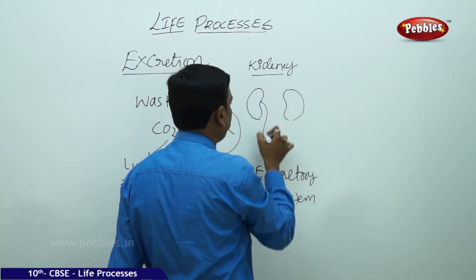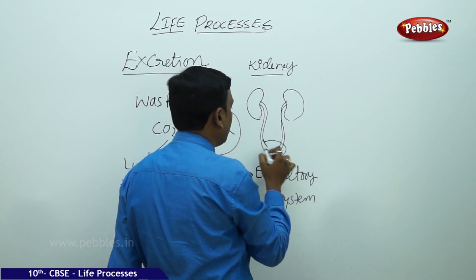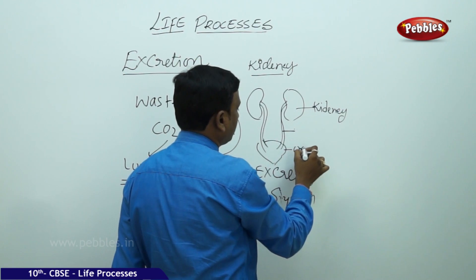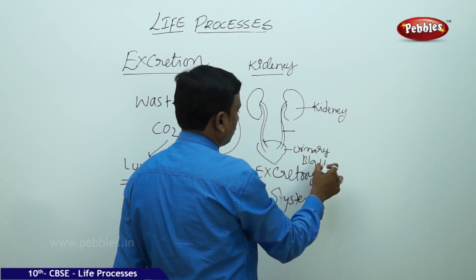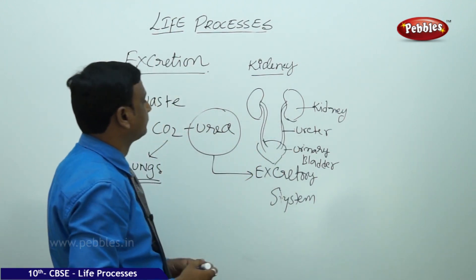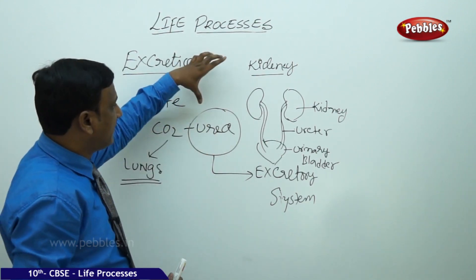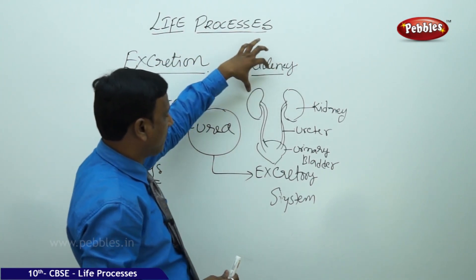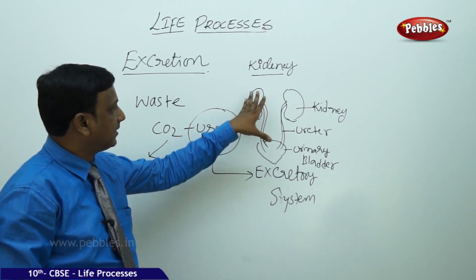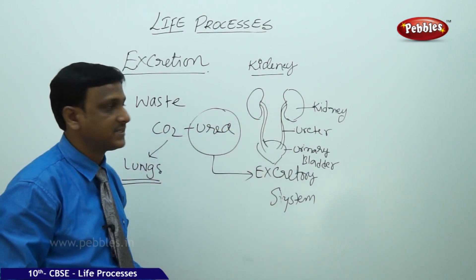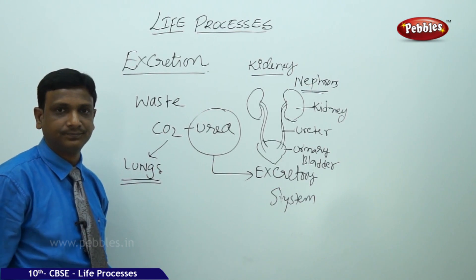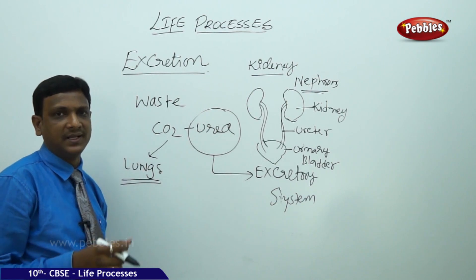The kidneys are red, bean-shaped organs present in the abdominal cavity. The excretory system also includes the urinary bladder, ureter, and urethra. Kidneys are the major organs of excretion. The blood supplied to the body parts from the heart is also supplied to the kidneys. The kidneys have highly coiled blood capillaries, and they have structural and functional units called nephrons. These nephrons are associated with blood vessels — nephrons are the tiny filters.